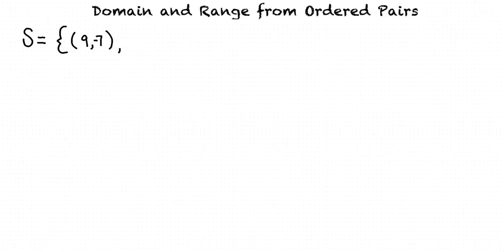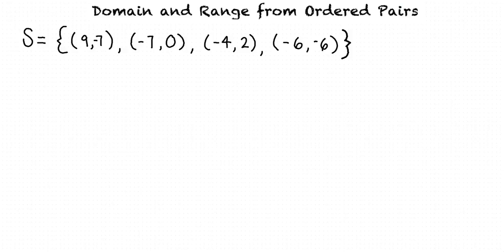Say we are given the relation s as: s equals (9, -7), (-7, 0), (-4, 2), and (-6, -6), and are asked to give the domain and range of s and to write our answer in set notation.